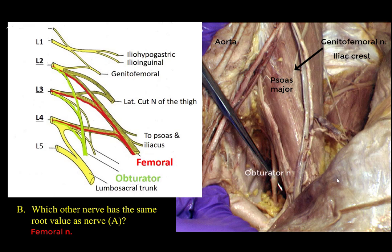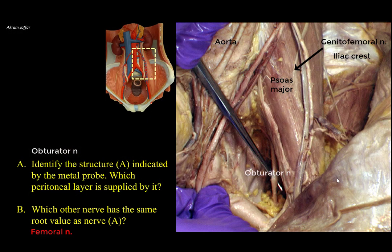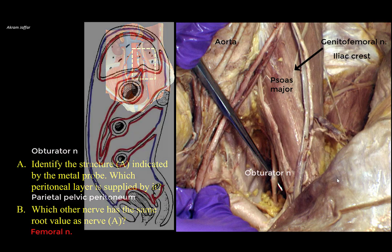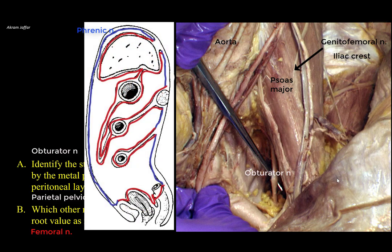The obturator nerve is motor and sensory to the medial thigh — the adductor compartment. In addition, within the pelvis, it supplies the parietal pelvic peritoneum. The parietal peritoneum, whether in the pelvis or abdomen, like other parietal layers of serous membranes, is supplied by somatic nerves. For example, the diaphragmatic peritoneum is supplied by the phrenic nerve, and the parietal peritoneum of the anterolateral abdominal wall is supplied by the lower intercostal and first lumbar nerves. So the obturator nerve, at this location, supplies part of the parietal pelvic peritoneum.